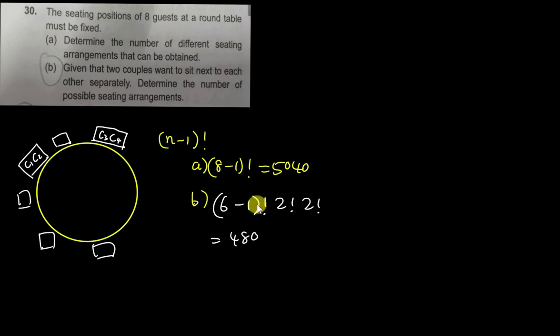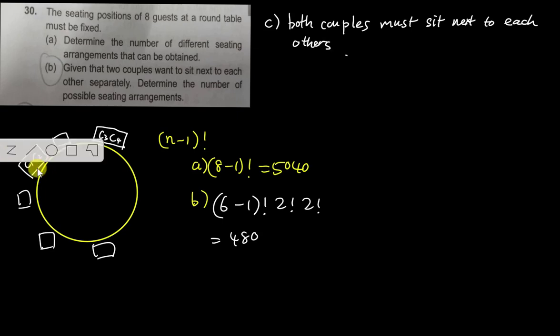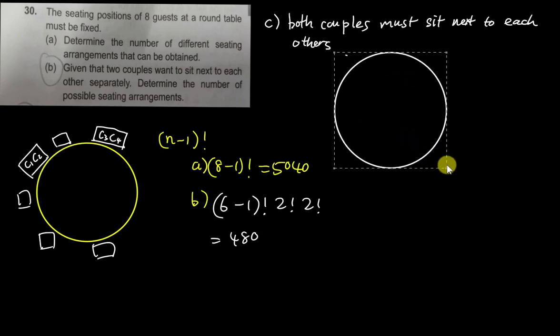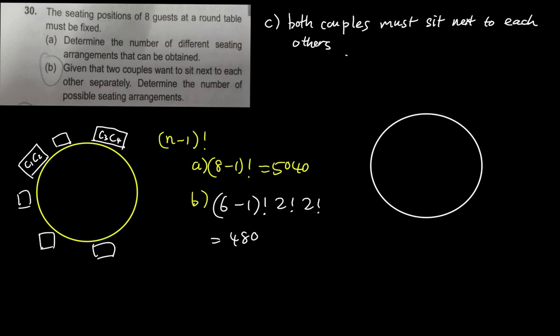All right, so basically that's all for a and b. Let's add one more c by myself. So let's say both couples must sit next to each other. This one is slightly different. Let me put a circle first. Let's say I will just fix the first couple, let's say call them C1 and C2 here.